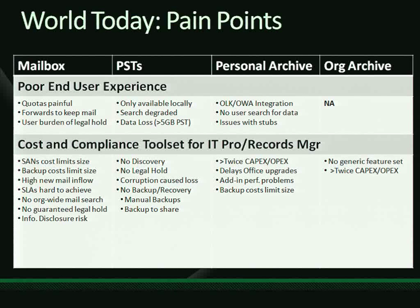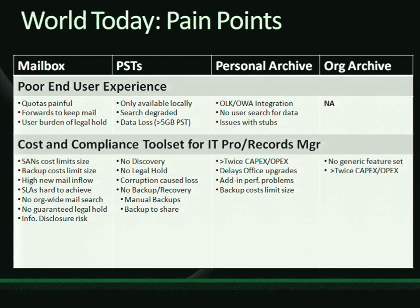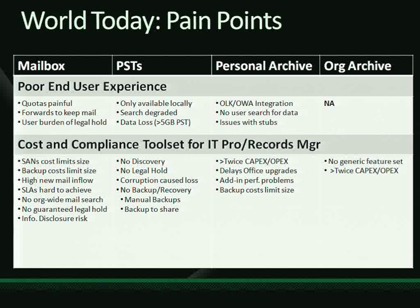From the IT pro perspective, a lot of these archive features are deployed so the IT pro can fulfill that 6 p.m. requirement to discover all mail between 2007 and 2008 with a specific keyword. The mailbox fulfills requirements to some degree but doesn't scale. PSTs are cheap, but if you ever have to discover them, it's a nightmare. One customer described how a VP had a lawsuit, and incriminating email about kickbacks was found in his PST on his summer home in Switzerland. The IT person had to fly to all his summer homes to retrieve the data — that's the kind of pain we're going to eliminate.